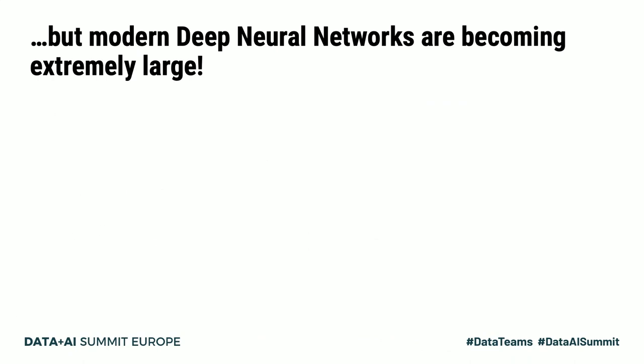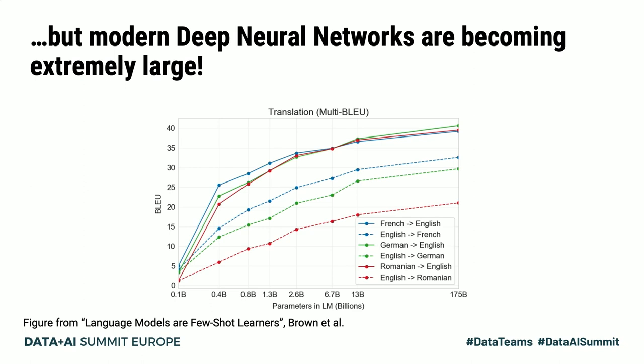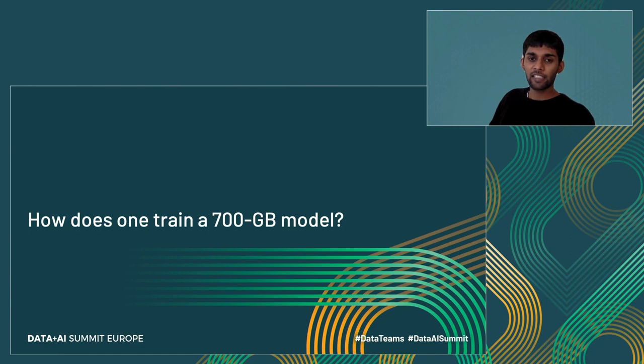While this is all fine and good, modern deep neural networks are in fact becoming much larger. This is a graph from the recent GPT-3 paper showing training accuracy (blue score) on the y-axis and the number of parameters in the language model on the x-axis. As we can see, translation performance improves as the size of the model increases. The largest model shown has 175 billion parameters, which is 700 gigabytes in 32-bit precision. The natural question is: how does one actually train a 700-gigabyte model?